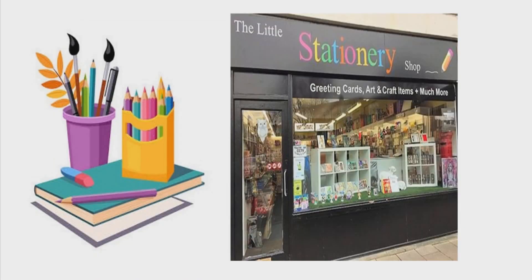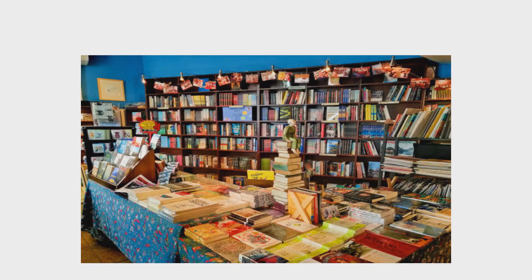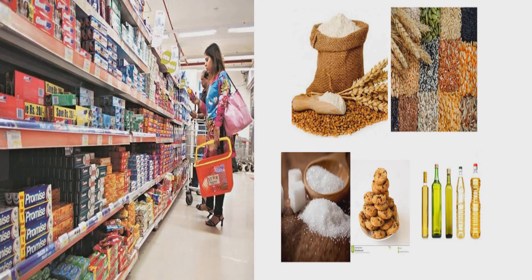Okay kids, now tell me. Notebooks, pens, or pencils — do you buy all these things? Yes, from the stationery shop. Next, story books, school books, magazines — where do you buy these? From the book shop. What about rice, pulses, toothpaste, sugar, and biscuits? You would buy these from the grocery shop.